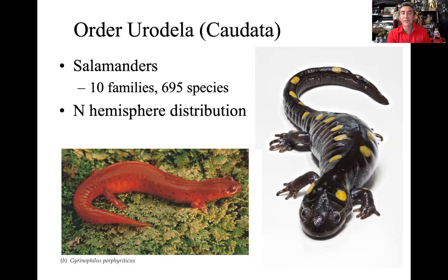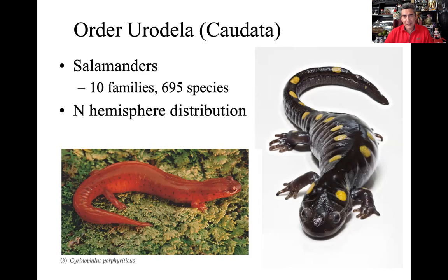We have 10 families represented by almost 700 different species, so it's a diverse group. Interestingly, they're distributed primarily in the northern hemisphere. If you were to go to the Amazon rainforest — lush, tropical forest — or to the southern hemisphere areas of Africa, you'd be surprised that they're going to be absent from a lot of these areas. So primarily a northern hemisphere distribution; biogeographically, they didn't radiate down south — they stayed up more north.